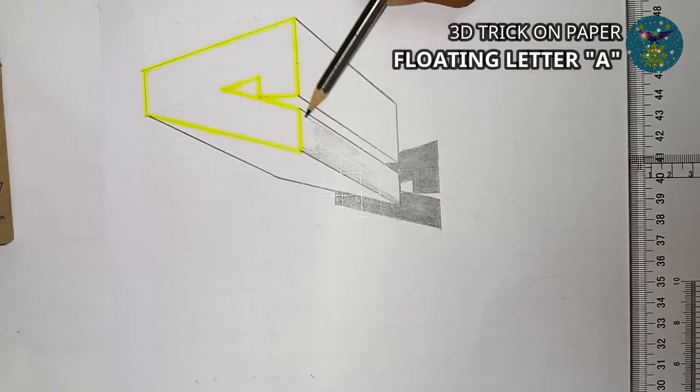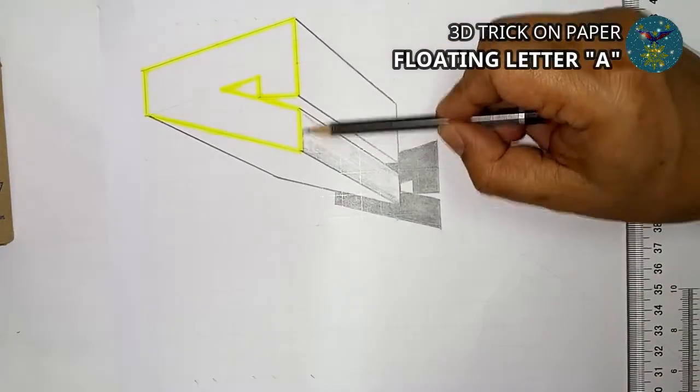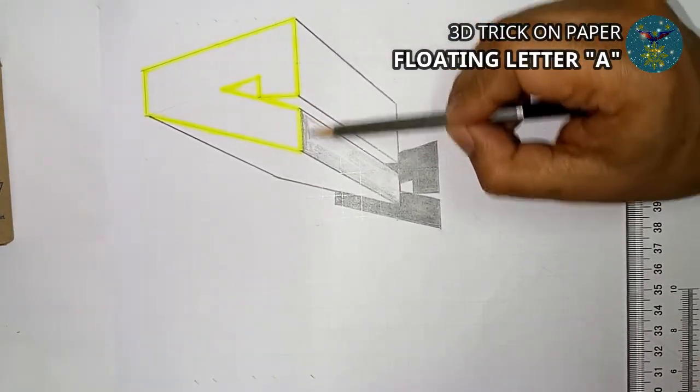Also shade the shadow of the object thickness using Derwent Academy sketching pencil 4B till it become black or dark.